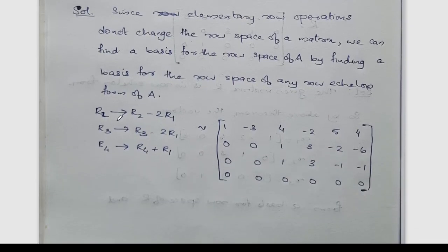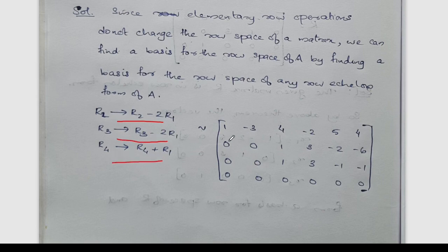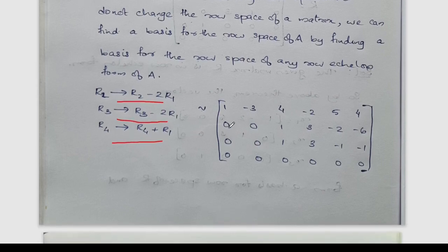R2 becomes R2 minus 2R1. R3 becomes R3 minus 2R1. R4 becomes R4 plus R1. After these operations, the first row remains 1, 3, 4, 2, 5, 4, and the second row becomes 0, 0, 1, 3, 2, 6.